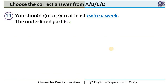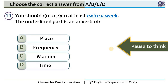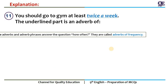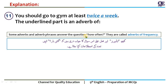Question 11: 'You should go to gym at least twice a week.' 10 seconds to think. The answer is adverb of frequency. Some adverbs and adverb phrases answer the question 'how often' — they are called adverbs of frequency. This shows how frequent, or how often. 'You should go to the gym at least twice a week' — twice a week, meaning two times per week.